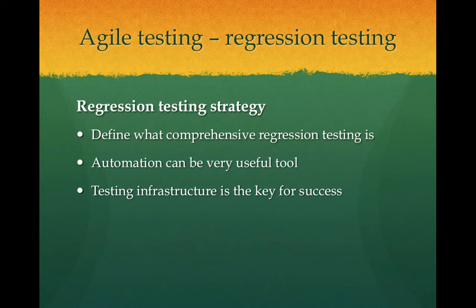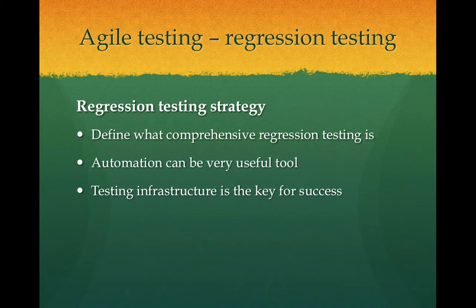What I recommend for this regression testing strategy — first, we need to clearly define what comprehensive regression testing is. This requires the dev team and test team to get together and think about what test results will represent the comprehensive status of the application. Once we see this list of results, we can tell if the application is in a good or bad state. This list depends on the context of your application — some applications are memory sensitive, some are load/stress sensitive, or sensitive about performance. So we need to think about non-functional aspects plus the functional aspects as well.